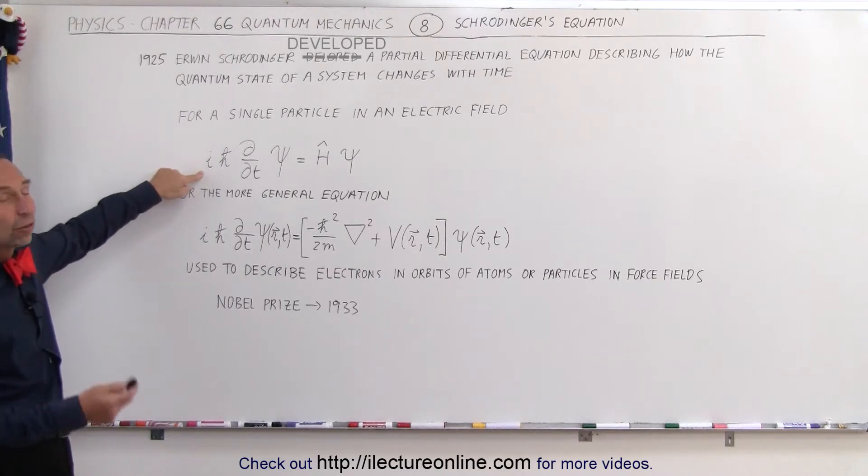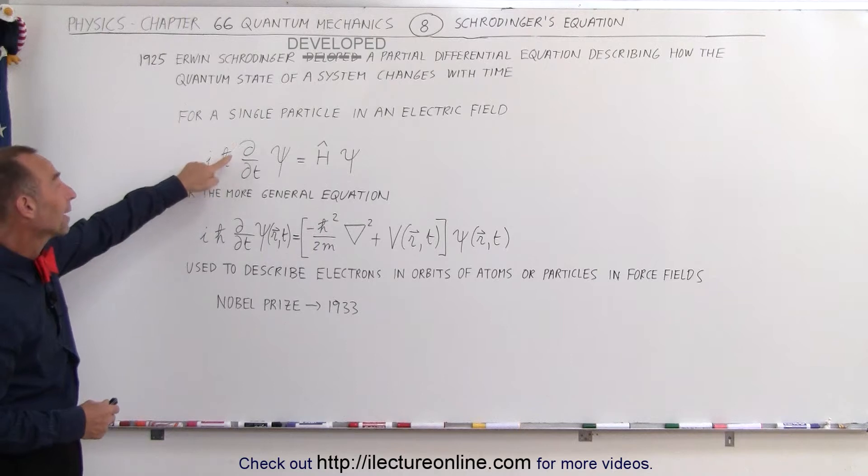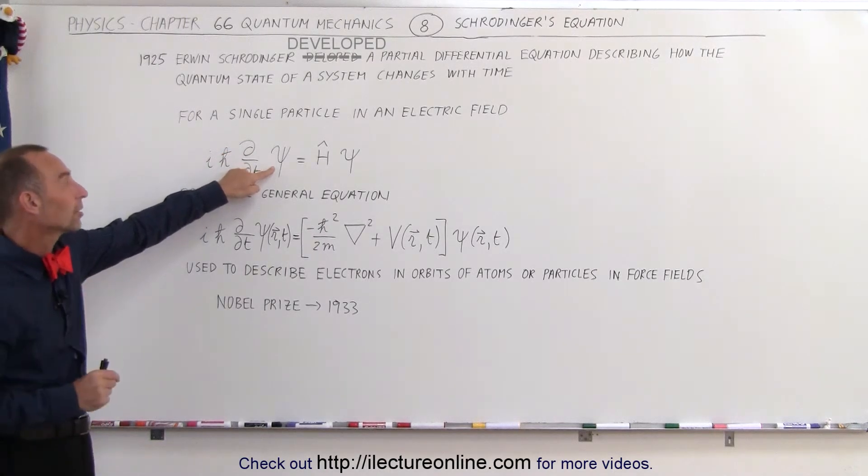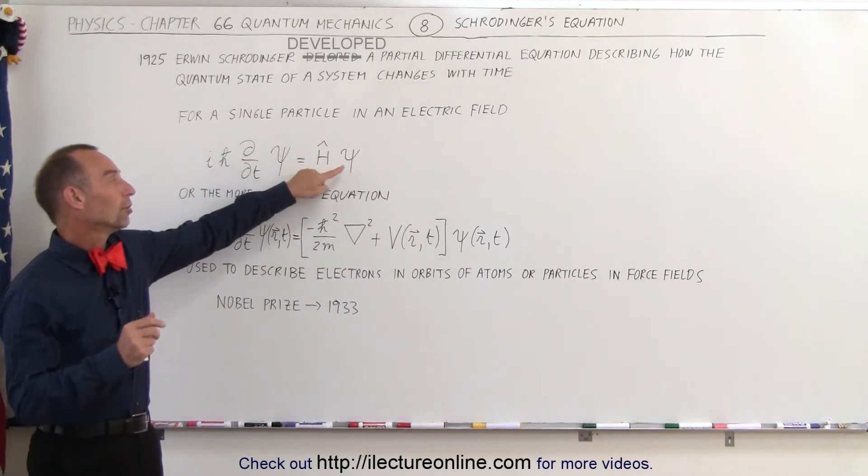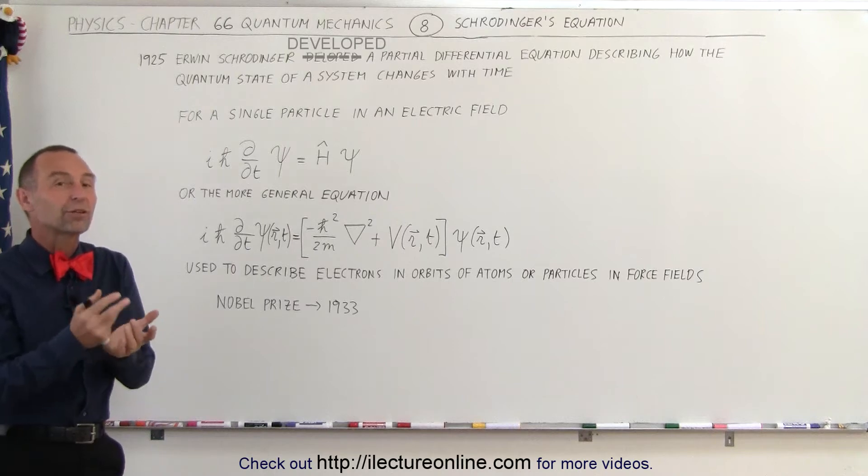It is i, the square root of negative 1, times h-bar, which is h divided by 2 pi, times a partial derivative with respect to time of the function describing the state of the particle, which is equal to the state of the particle times the effect that it has in a particular field. In this case,